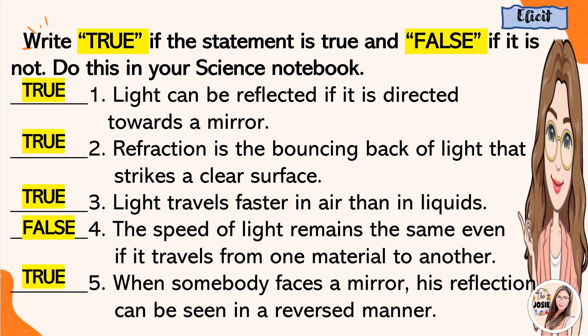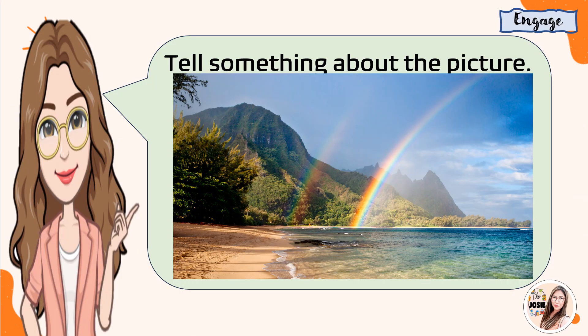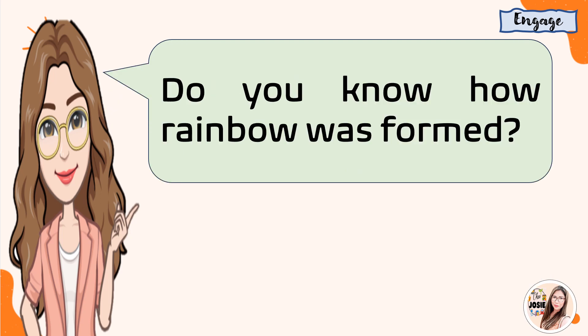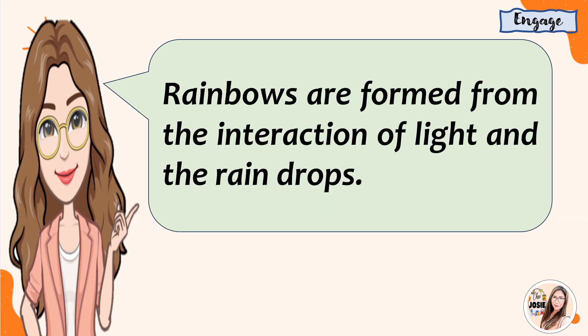I do hope you got a perfect score. I have here a picture. Can you tell something about it? When do you usually see a rainbow? Do you know how a rainbow was formed? Rainbows are formed from the interaction of light and the raindrops.